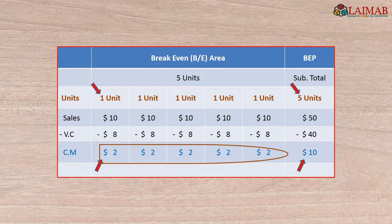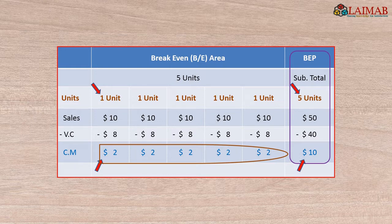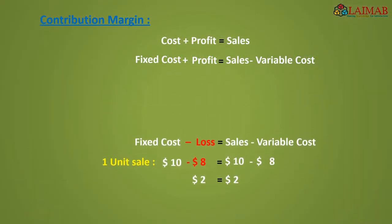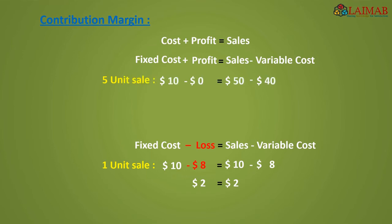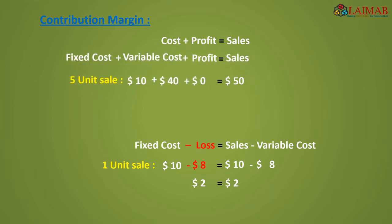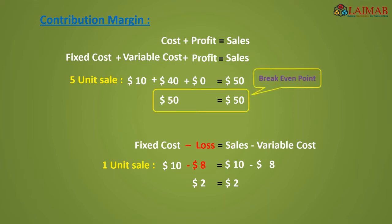At this point, total sales — $10 each for 5 units — is $50. Variable cost — $8 each for 5 units — is $40. And contribution margin is $10 total. So sales of $50 first recover variable cost of $40 and then fixed cost of $10. That means total cost of $50 is recovered by total sales of $50. There is no loss and no profit for the company, so it is called the breakeven point.